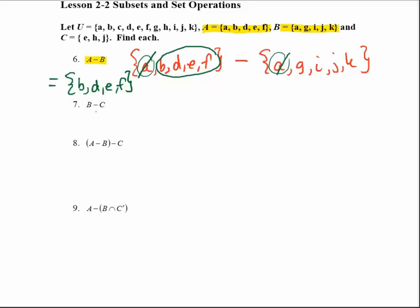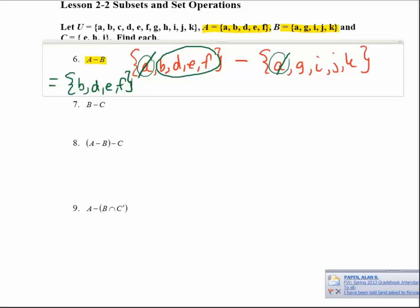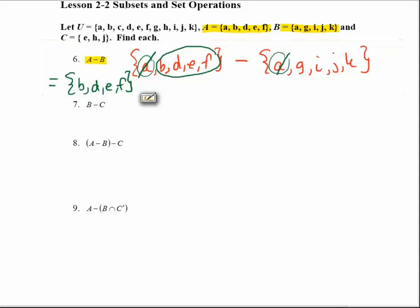So now let's look at the next difference. Here we're subtracting B minus C. So then I want to list all the set B first.